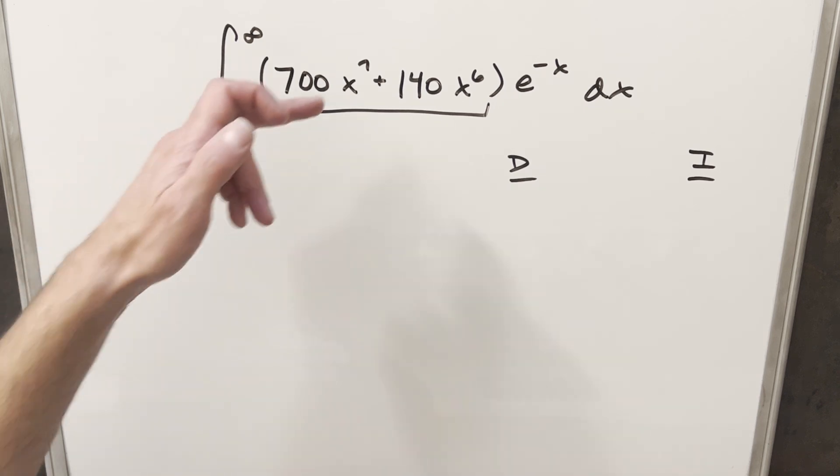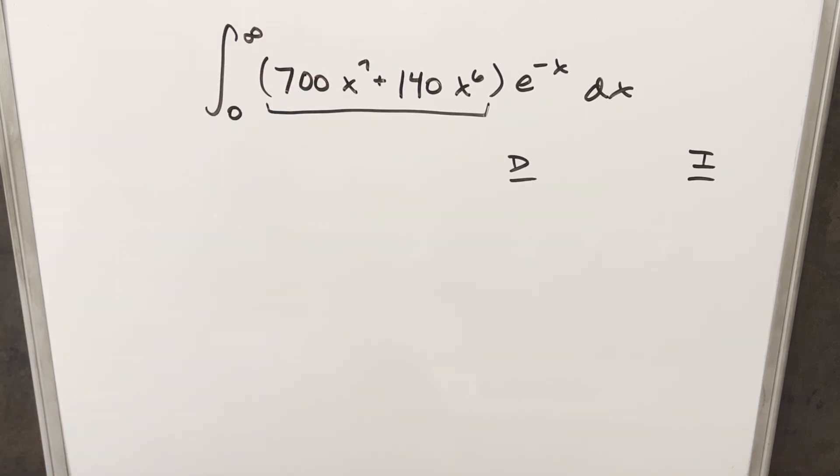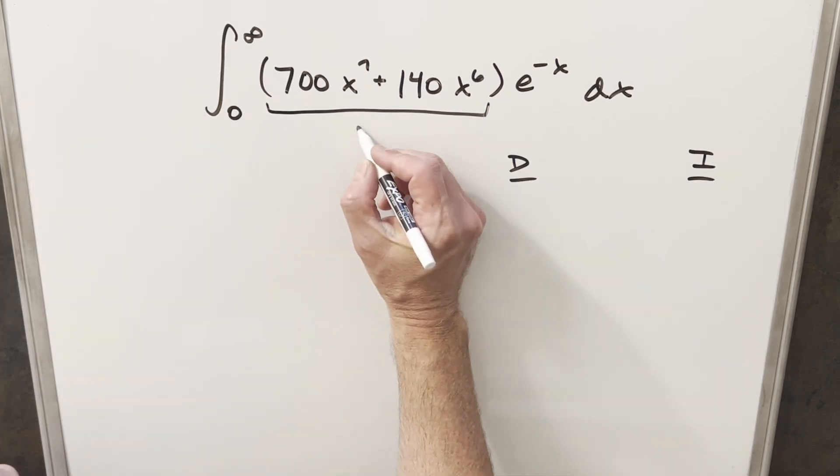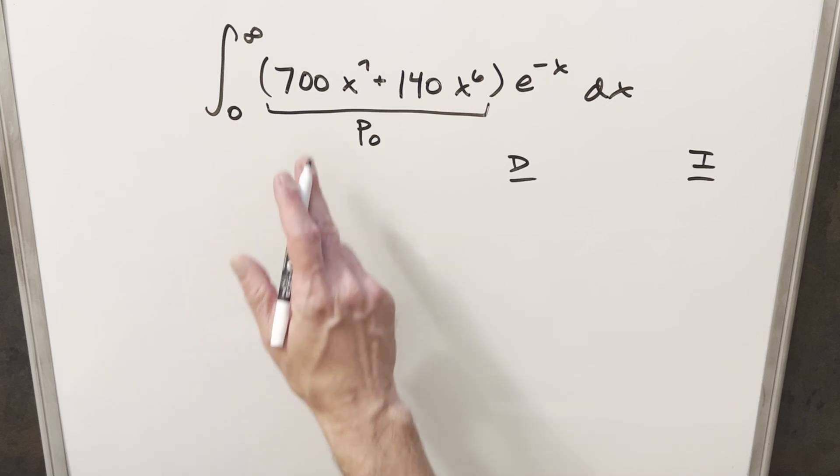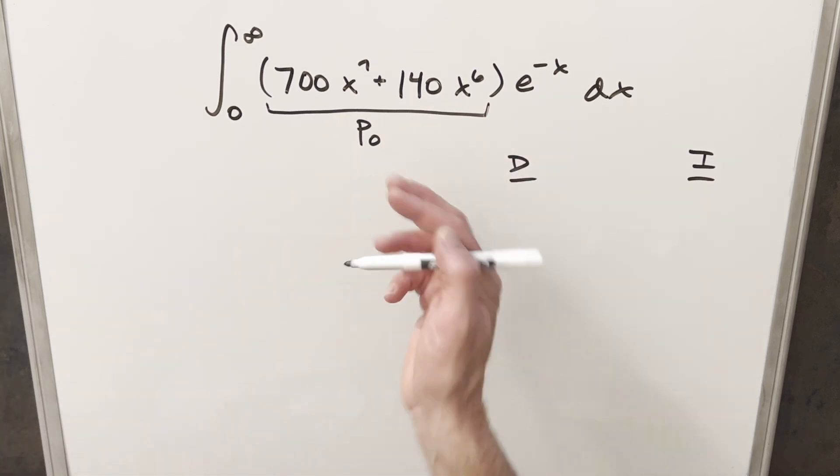So this is really set up for us to use integration by parts using the DI method or tabular integration over here to the right. But because we have kind of a higher degree polynomial, I don't want to make this too tedious. I don't want to have to differentiate like 10 times or 8 times or whatever it is. So let's just put a label on this. I'm going to call this thing P₀ for a polynomial, for our first polynomial.